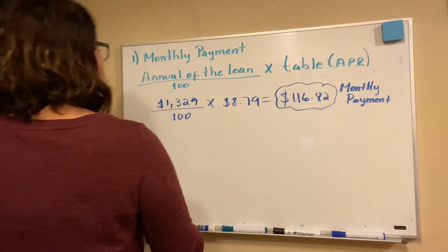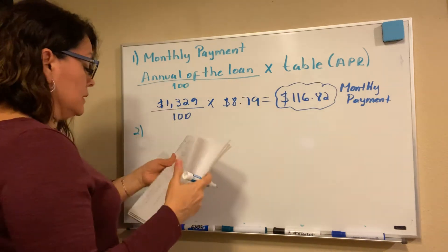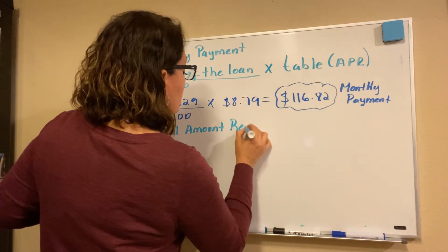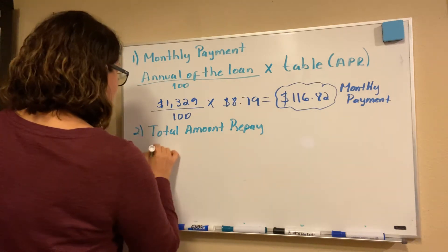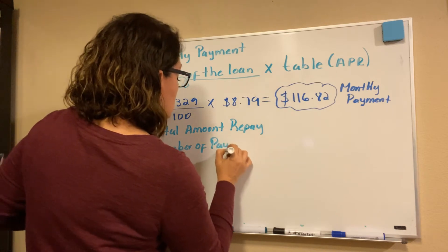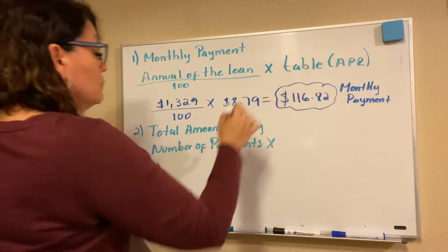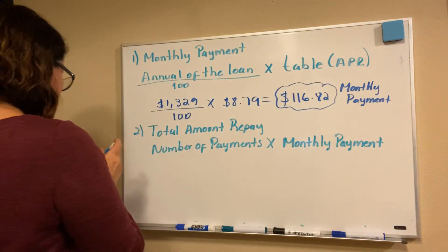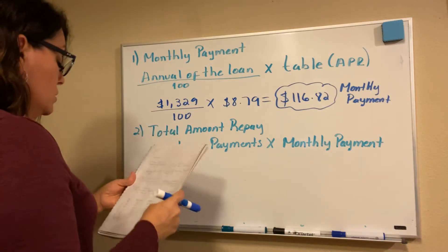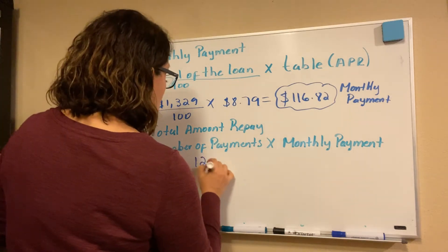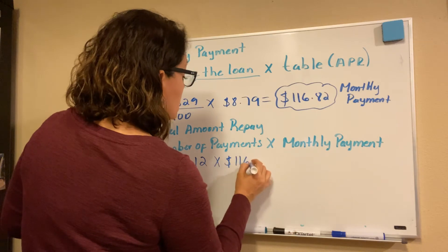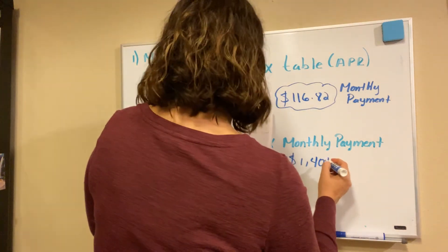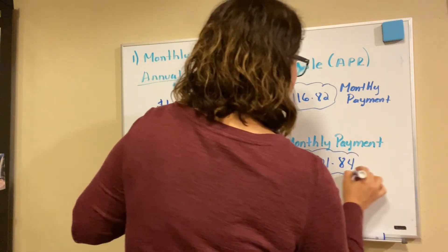Formula number two is the total amount repaid, which equals the number of payments times the monthly payment. In this example, she's paying for 12 months at $116.82 per month, so 12 times $116.82 equals $1,401.84. That is the total amount she ended up paying.